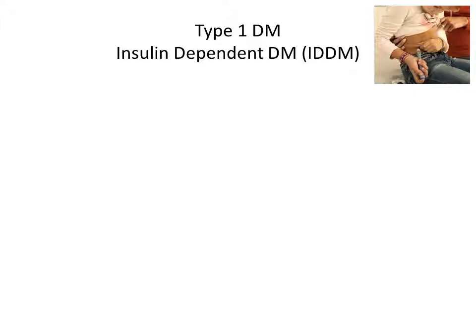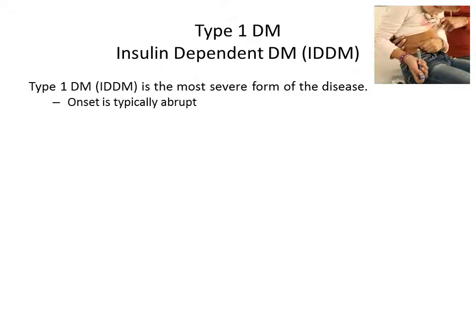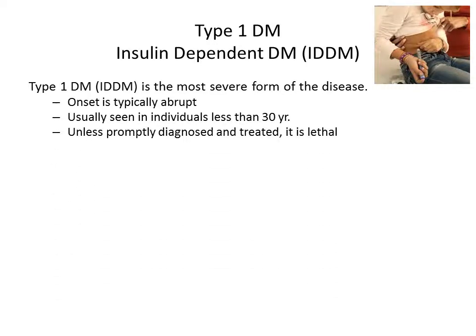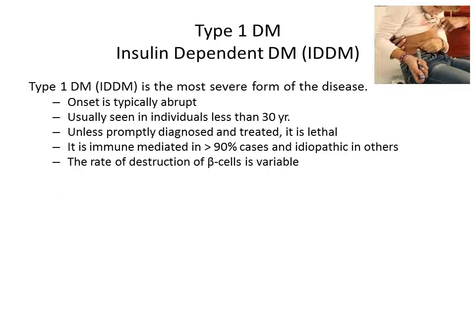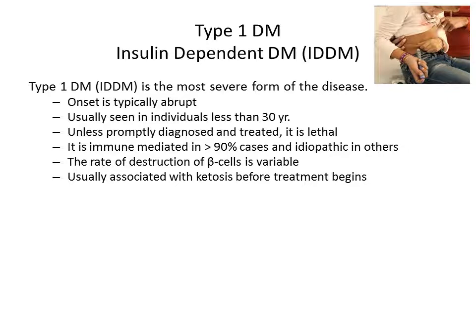Type 1 diabetes mellitus, also known as insulin-dependent diabetes mellitus, is the most severe form of the disease. Onset is typically abrupt and usually seen in young individuals. Unless promptly diagnosed and managed, it can be lethal in the very first presentation. In more than 90% of cases it is immune-mediated. There is destruction of beta cells of the pancreas, but the rate of destruction is variable — from sudden to slow destruction.